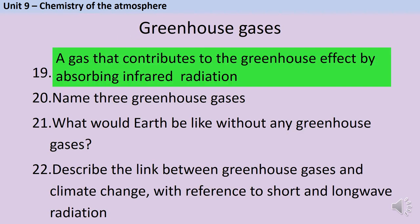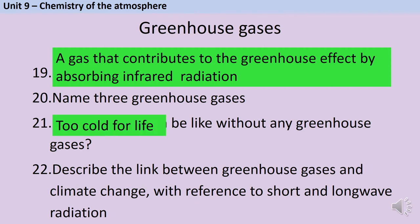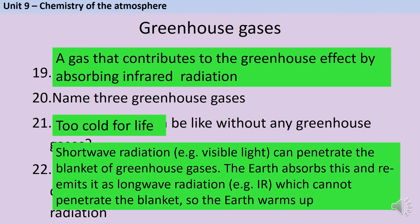A greenhouse gas is a gas that contributes to the greenhouse effect by absorbing infrared radiation. Three greenhouse gases are carbon dioxide, methane, and water vapour. If there weren't any greenhouse gases at all, then it would be significantly colder on Earth, and basically nothing would be able to survive.